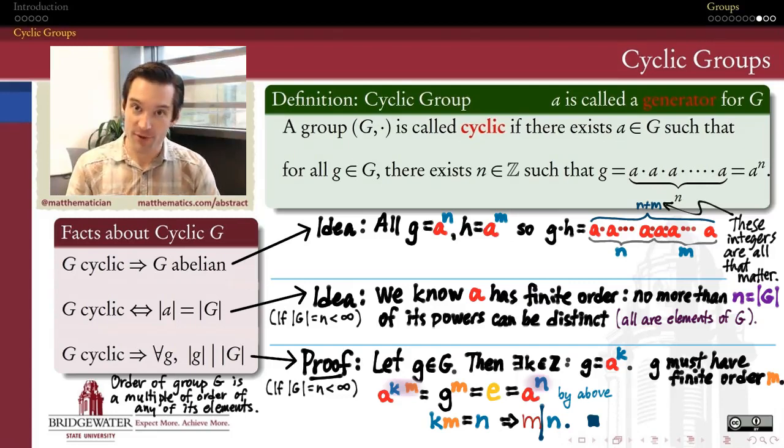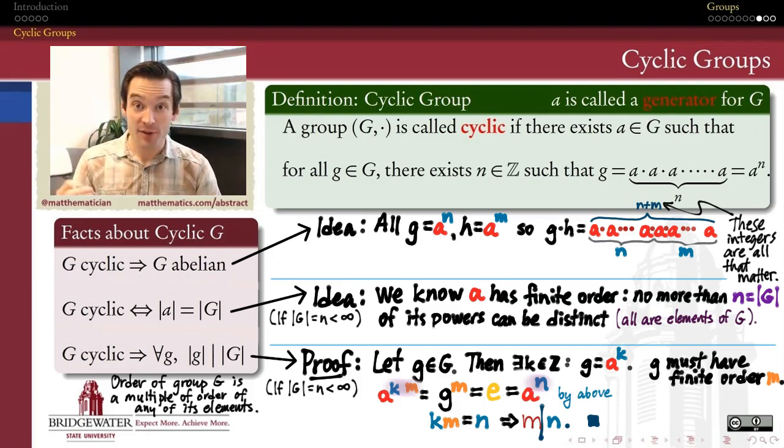Cyclic groups are such happy groups because all of their properties can be explained by analogous properties enjoyed either by addition of integers or addition modulo n of equivalence classes of integers. Because cyclic groups have so many nice properties, it turns out we're going to want to use them as obvious places to look for the building blocks of larger and more complicated groups.